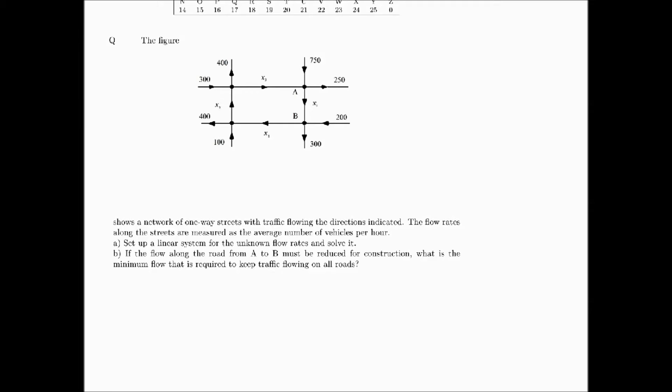The unknown flow rates are x1, x2, x3, and x4 — these are the four unknown flow rates. Keep in mind that you cannot change the direction of the flow of traffic.